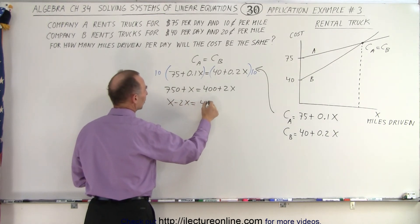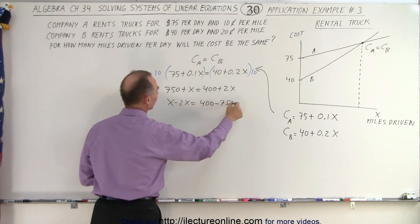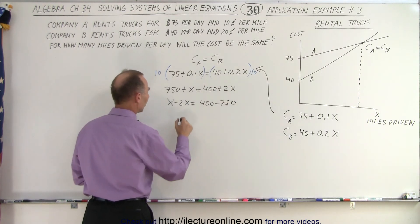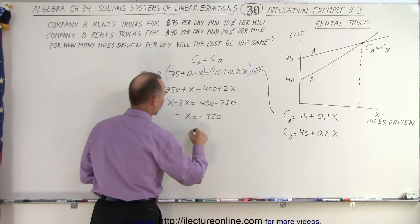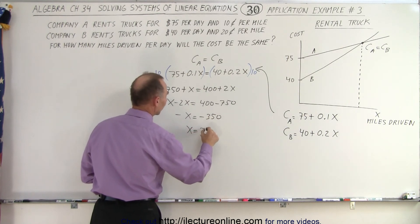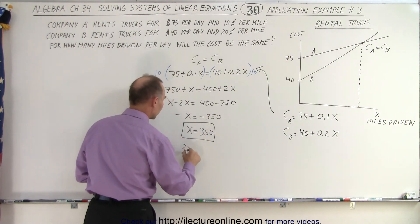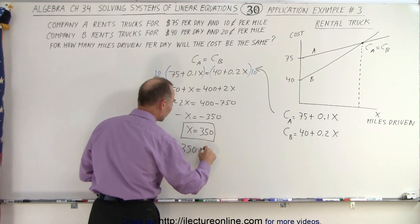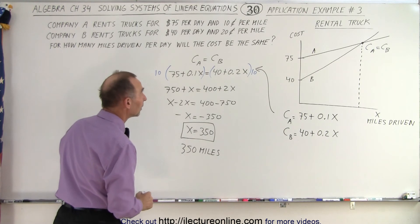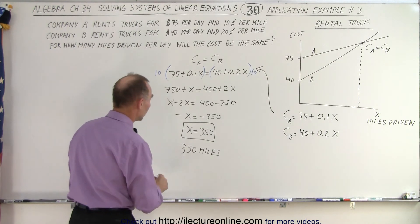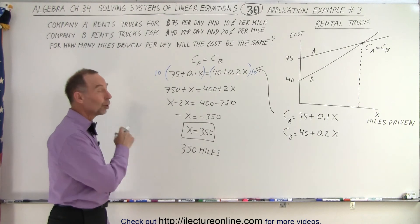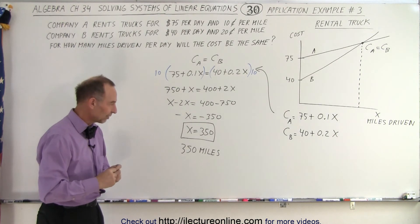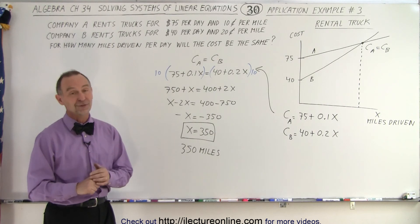Now let's move all the x terms to one side: x minus 2x equals 400 minus 750, so negative x equals negative 350, which means x equals 350. This means that if we drive the truck more than 350 miles in a day we should go with Company A; less than 350 miles we should go with Company B to get the cheapest rental price. And that is how it's done.